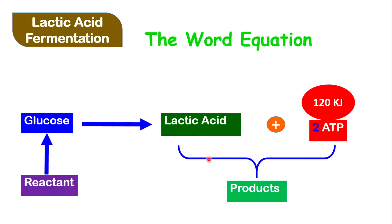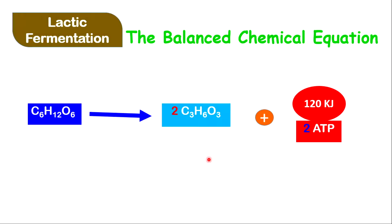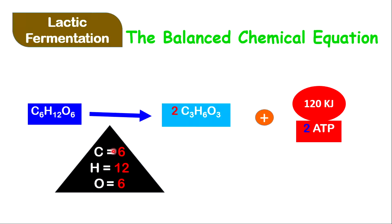Let's look at the balanced chemical equation. Notice the glucose molecule breaks down into half: from C6 you get C3, from H12 you get H6, and from O6 you get O3, which is the formula for lactic acid. To balance this equation, you simply multiply the lactic acid by 2, giving you 6 carbon, 12 hydrogen, and 6 oxygen on either side.